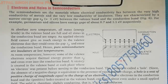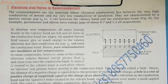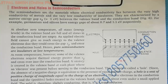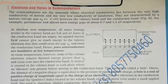The next topic to discuss is electrons and holes in semiconductors. The energy band structure of conductors, insulators, and semiconductors should now be clear. In the energy band structure of semiconductors, we have established that a few electrons go from the valence band to the conduction band.